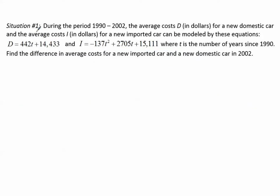Let's take a look at situation number one. During the period 1990 to 2002, the average costs D in dollars for a new domestic car and the average costs I in dollars for a new imported car can be modeled by these equations, where T is the number of years since 1990. Find the difference in the average costs for a new imported car and a new domestic car in 2002. Remember, difference means to subtract, so we are asked to subtract these two functions.